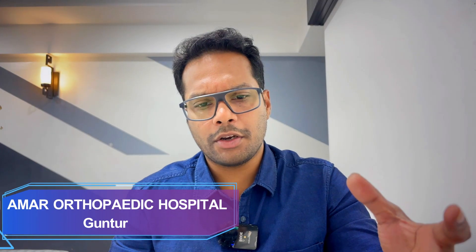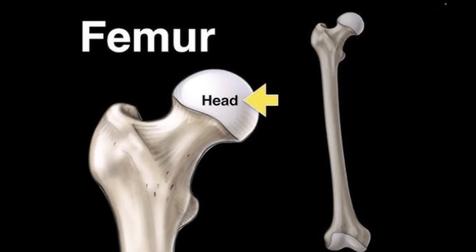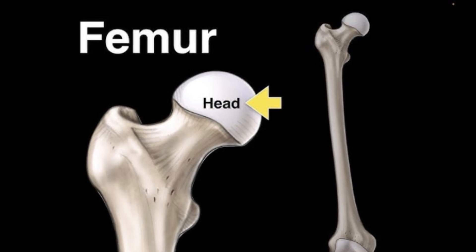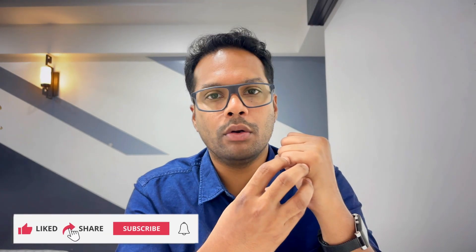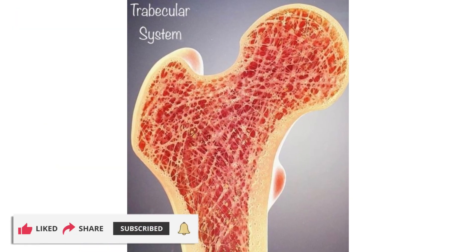Before going into the detailed explanation or the mechanism, I would like to show you the concise anatomy of the femoral head. If we look at the femoral head, it is covered with cartilage — the smooth lining — which is similar to many other joints. Beneath the cartilage supporting it, you have the thicker subchondral bone, which is actually the supporting structure of the femoral head. And beneath the subchondral bone, you have the smooth bone with trabeculae.